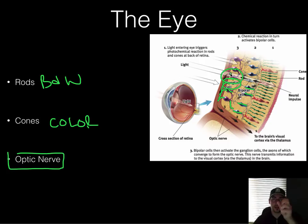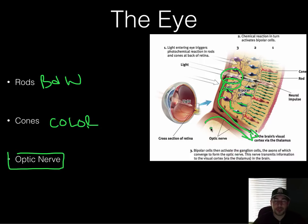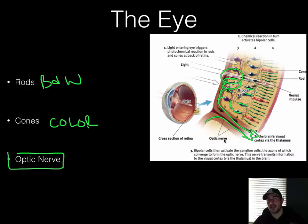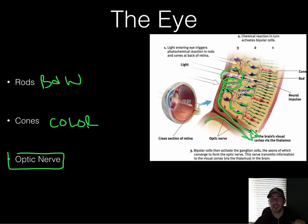The optic nerve sends information to the back of the head, through your thalamus, to your occipital lobes. So from rods and cones, a chemical reaction signals bipolar cells, which send information to ganglion cells, whose axons form the optic nerve, which is sent to the back of the head.